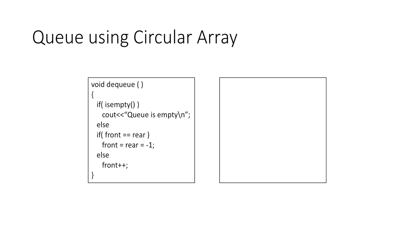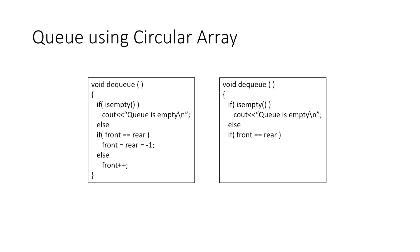In the dequeue function, the empty check remains the same. If front equals rear, there is only one element in the queue and we set both front and rear to minus 1. Otherwise, instead of just incrementing front, we make front equal to (front + 1) modulus size so that front moves in a circular way, just as we did with rear.